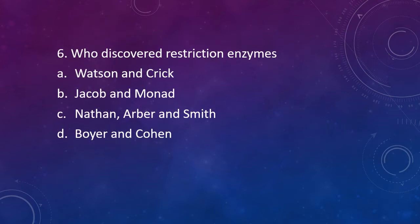Question 6: Who discovered restriction enzymes? Option A: Watson and Crick. Option B: Jacob and Monad. Option C: Nathan, Erber and Smith. Option D: Boyer and Cohen. Who discovered restriction enzymes?